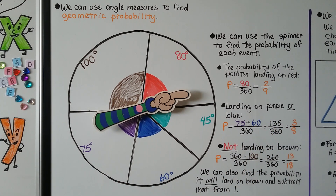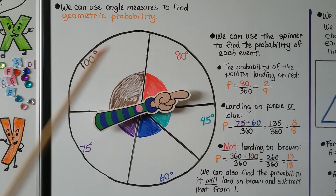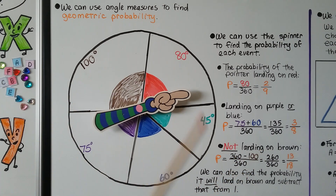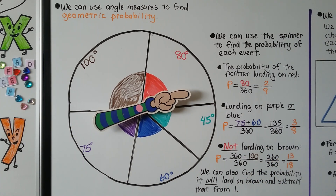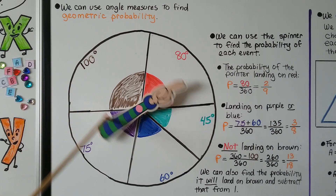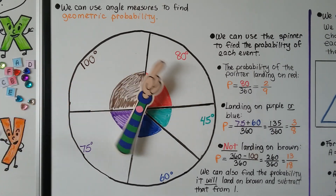The probability of NOT landing on brown: we do 360 minus 100 degrees, giving 260, over 360 — that simplifies to 13 eighteenths. Alternatively, we find the probability of landing on brown, which is 100 over 360, and subtract from 1: 1 minus 13 eighteenths equals 5 eighteenths chance of landing on brown.